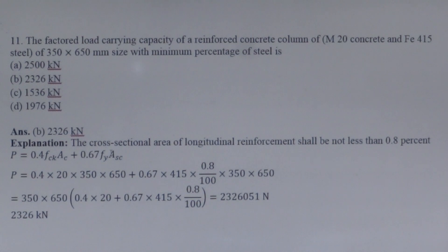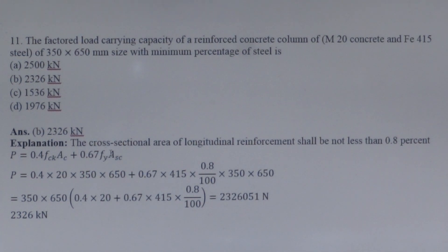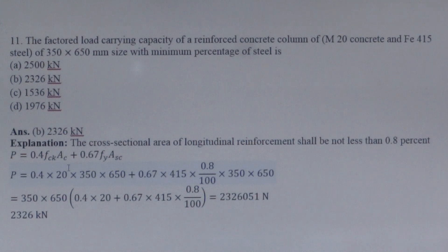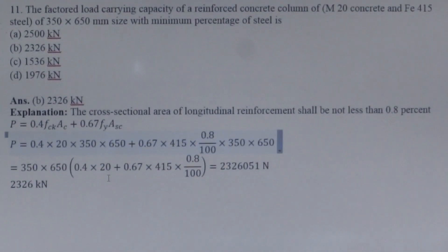Next question: The factored load carrying capacity of a reinforced concrete column of M20 concrete and Fe 415 steel of size 350×650 mm with minimum percentage of steel. Using the limit state formula for column design: Pu = 0.4·fck·Ac + 0.67·fy·Asc. The column is designed with minimum percentage of steel equal to 0.8% of the cross-sectional area. The load carrying capacity of the column is equal to 2305.6 kN.